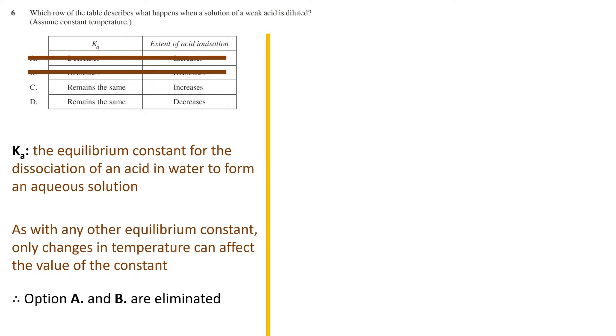To investigate how the extent of acid ionization changes, we can use the dissociation of acetic acid as an example of a weak acid. In this equilibrium reaction, we have water on the left-hand side reacting with the acetic acid molecules, forming an acetate ion and hydronium ion.